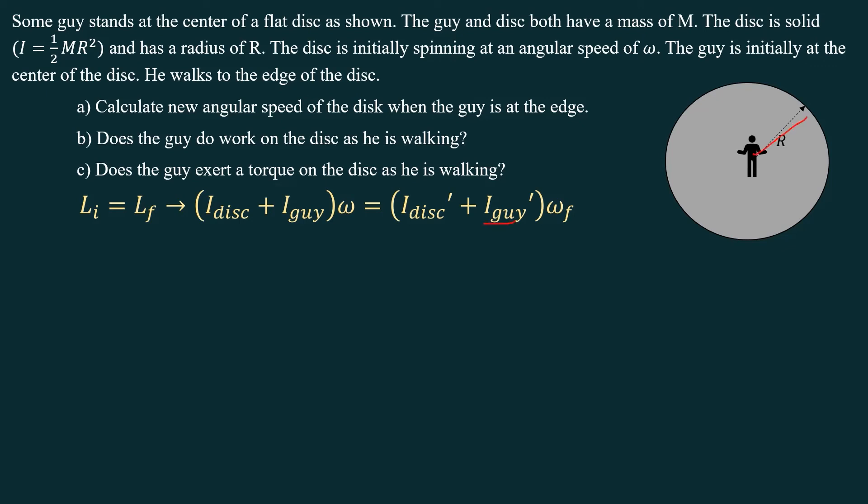Now the guy is going to increase because he's walking out to the edge of the disk. The disk moment of inertia will not change. So on both sides, we have one half MR squared for the disk. The guy, when he's at the center, so the guy's a point mass basically, when he's at the center his moment of inertia increases. So you can just go ahead and solve this for omega. And it turns out that the angular velocity goes down to a third of its original value.